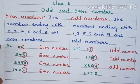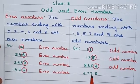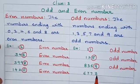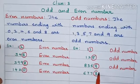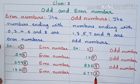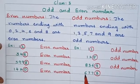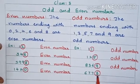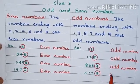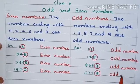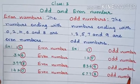Now the next one: 6,773. So let us see what is the last digit here. 3. So 3 is also an odd number. So 6,773 is an odd number.